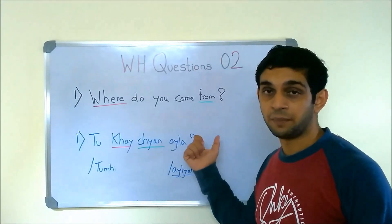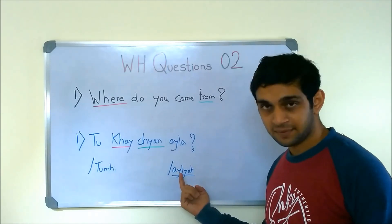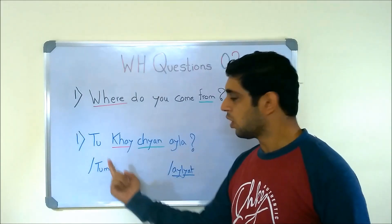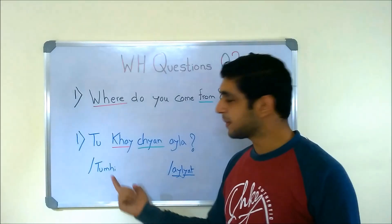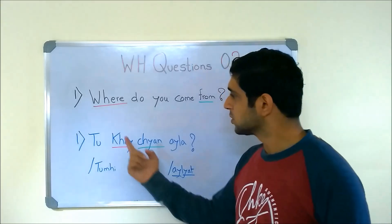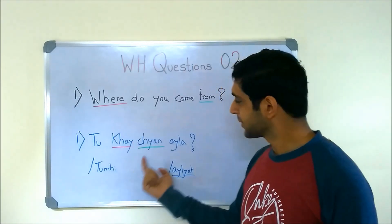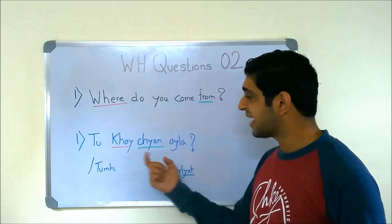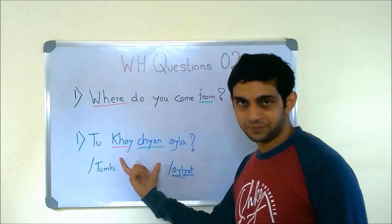WHERE do you come from? TUN or TUMI — you know that it is 'you', right? TUMI is for respect, TU is the informal one. So, KHON is WHERE, CHIAN is FROM. This is basically a preposition and while writing it, we write it together.